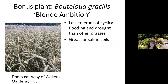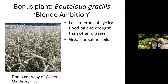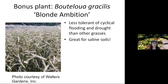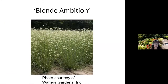I'm going to throw in a bonus plant: Bouteloua gracilis, Blonde Ambition blue gramma grass. This did not do as well in our rain garden studies — it was less tolerant of the flooding aspect. However, Randy has gone on to do other studies, including salt tolerance, because salts accumulate in rain gardens from de-icing. Blonde Ambition did really well under fairly high salt concentration. For those living in western North Dakota with saline soils, I would really recommend Bouteloua gracilis. It's absolutely gorgeous, with really unique horizontal seed heads.